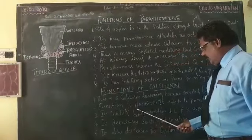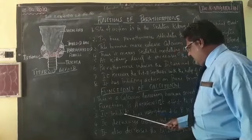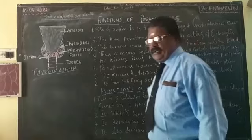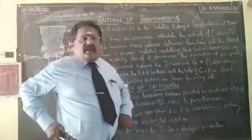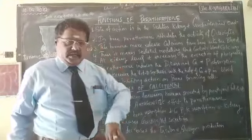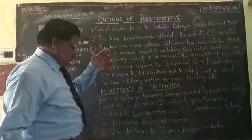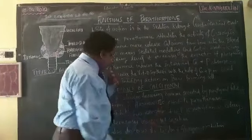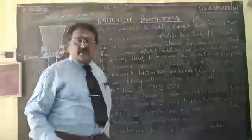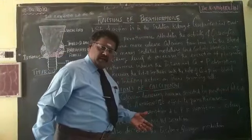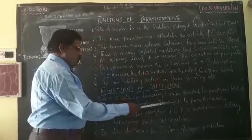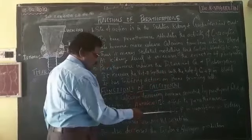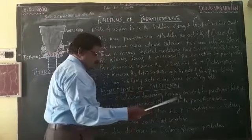Calcitonin has an anti-resorption function. It inhibits the resorption of calcium and phosphate at the kidney level. At the bone level, calcium resorption into bone formation is prevented. At the kidney level, reabsorption of phosphate, calcium, and potassium is also prevented because their excess presence is harmful to the body. They are excreted through the urine, and this is controlled by calcitonin.